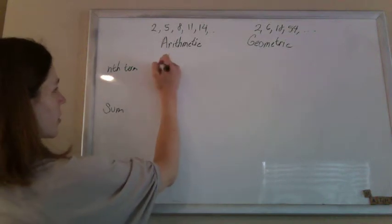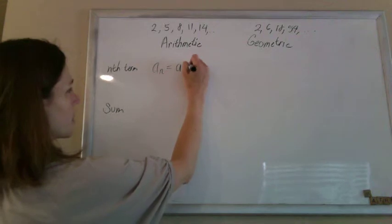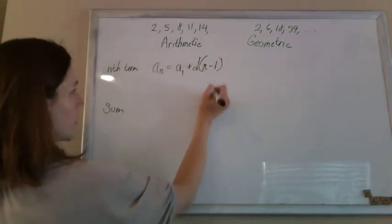So to get a formula for the nth term, a sub n is going to be your first term plus your common difference times n minus 1.